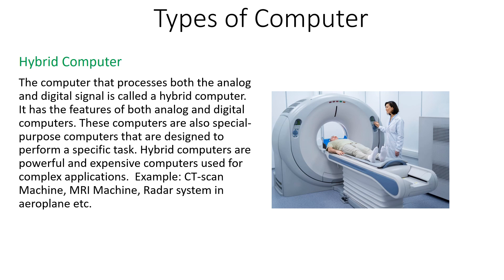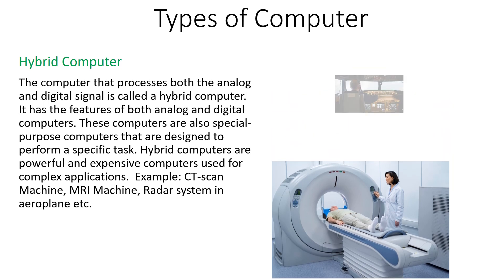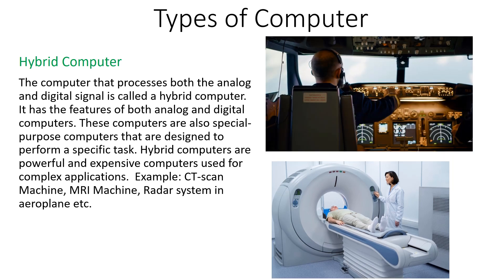For example, the CT scan machine used in hospitals for diagnosing the disease of patients. Similarly, the MRI machine or the radar system in aeroplanes and different other aircrafts are examples of hybrid computers that are capable of processing both analog and digital signals. So hybrid computers process both analog and digital signals and have the features of both analog and digital computers.